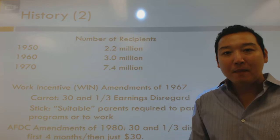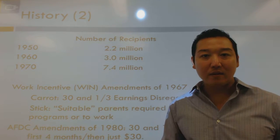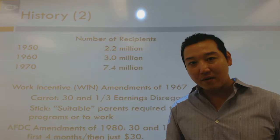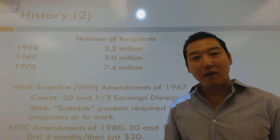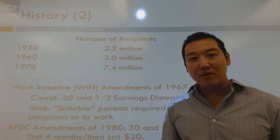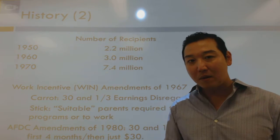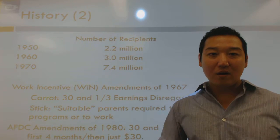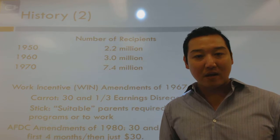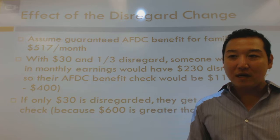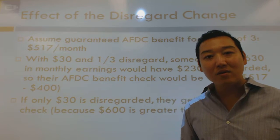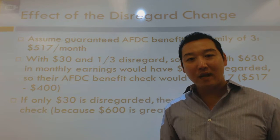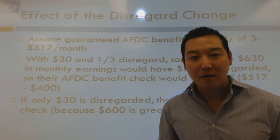There was another set of amendments in 1980, again reflecting concern over dependency. Despite the 1967 implementation of the 30-and-a-third disregard, welfare caseloads kept growing. So in 1980 we were less generous — the earnings disregard was scaled back from a 30-and-a-third disregard to essentially just a $30 disregard. The next slide shows the impact of that disregard change.